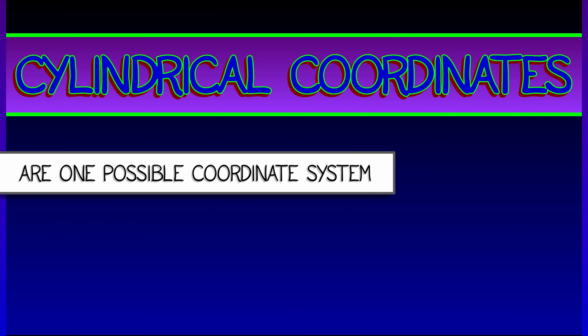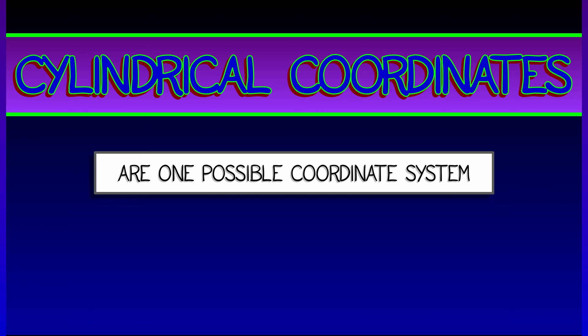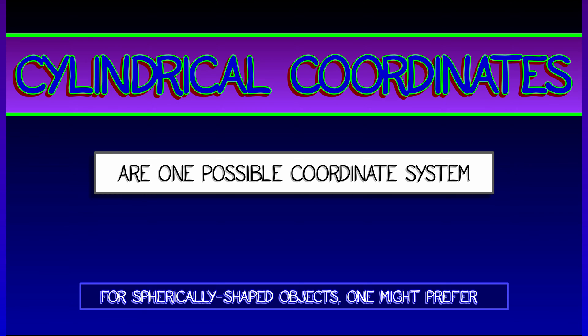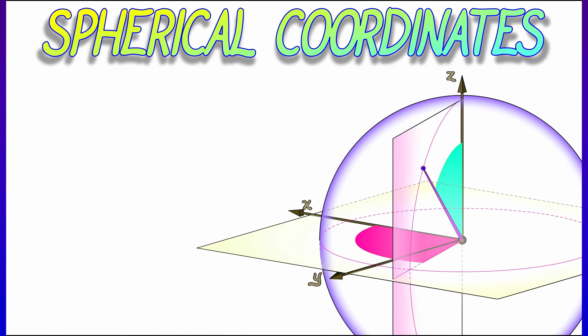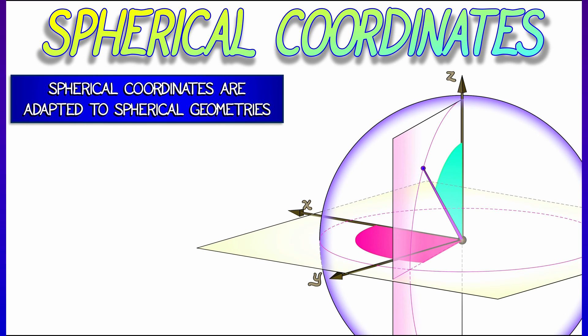Now, cylindrical coordinates are not the only coordinates that you can use. For a spherically shaped object, you might prefer to use a coordinate system that is specially adapted to that geometry. This would be spherical coordinates.